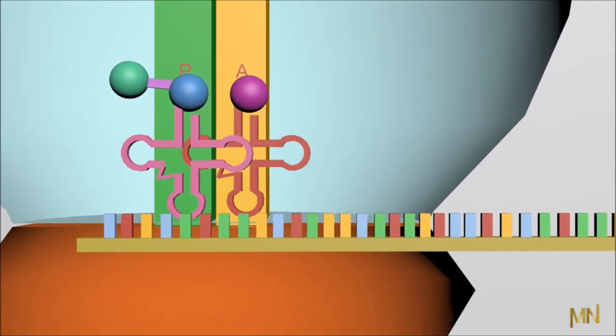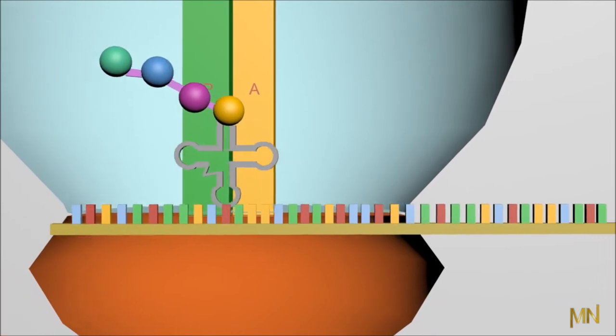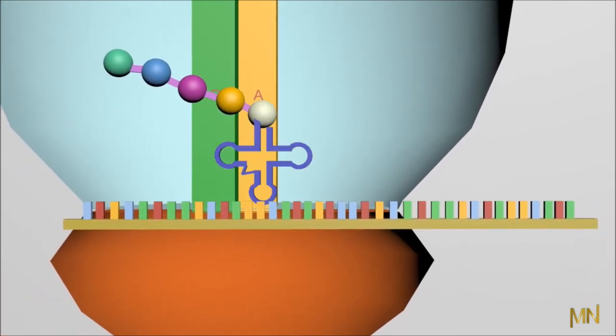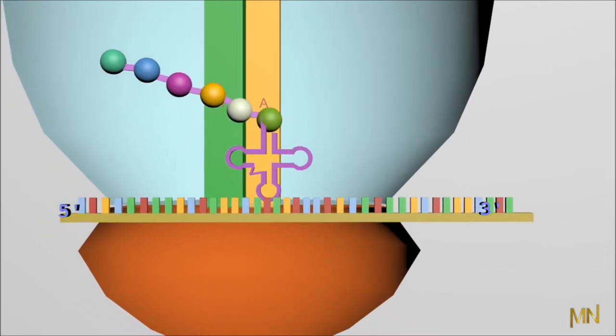Following this, new tRNA with amino acid arrives on the A site. Further, the amino acids from P sites gets transferred to A site and the peptide tRNA gets relocated to P site. The empty tRNA exits via E site.